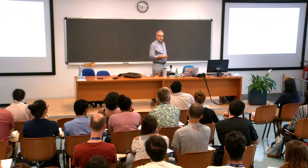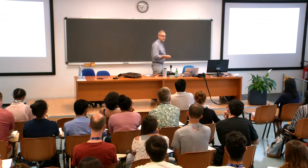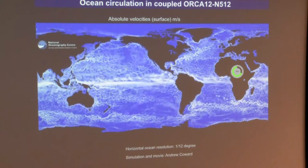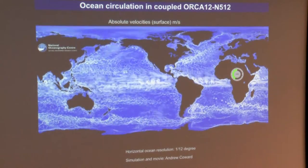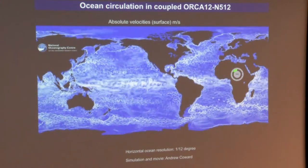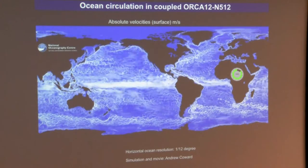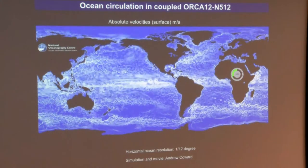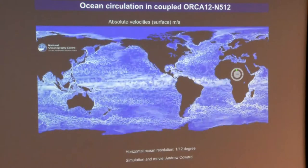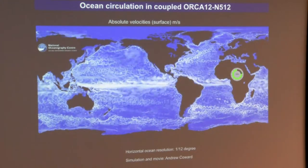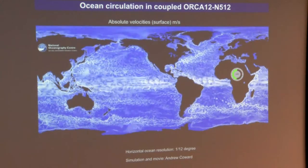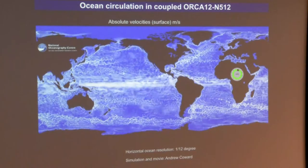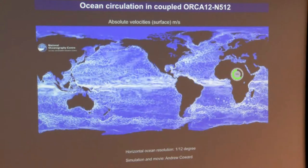Before getting into the theory, he wanted to show a couple of movies which aren't related to his talk but are very cool. The first is model results of ocean circulation — absolute velocities of a big ocean model called Orca or Nemo, a European model. White is fast, blue is slow. You can see the scales of motion are pretty small, with the Gulf Stream breaking up and lots of eddies all over the place with scales of a few hundred kilometers.